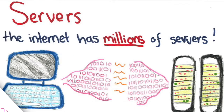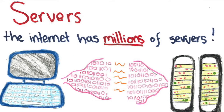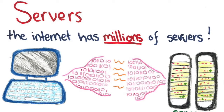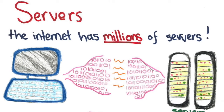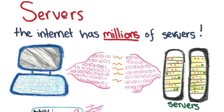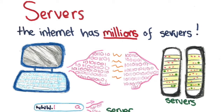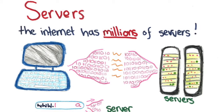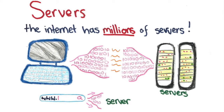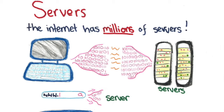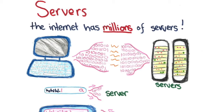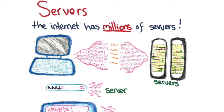What is a server? On the internet there are millions of computers called servers. A server is a computer designed to process requests and deliver data to another computer over the internet. Computers and servers can communicate with each other, though they may be in different countries or use a different language, as data is sent by zeros and ones.